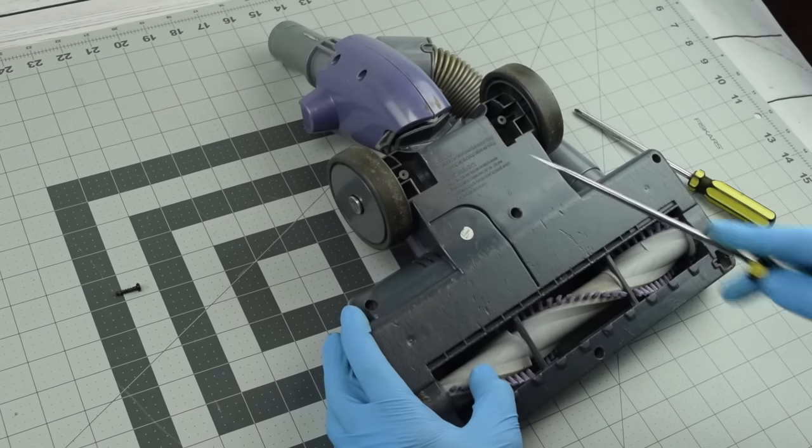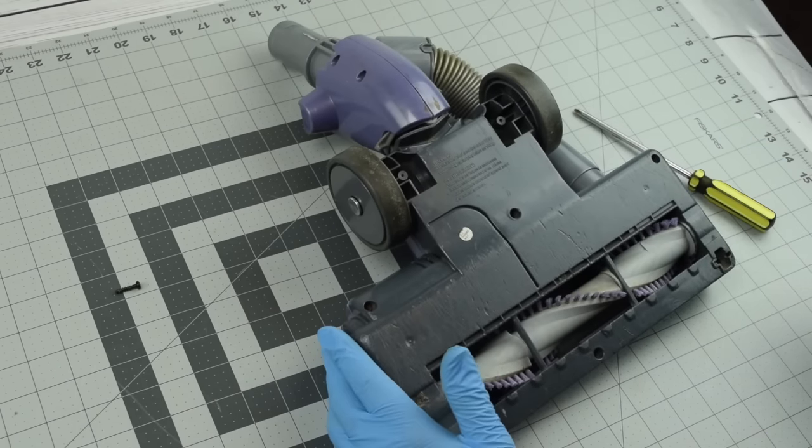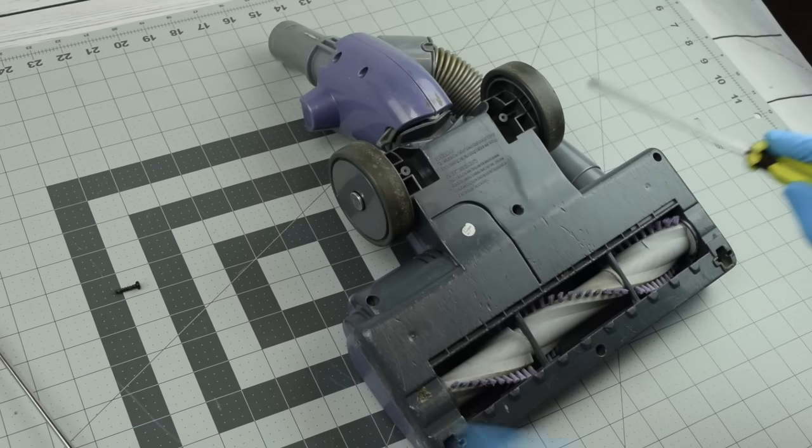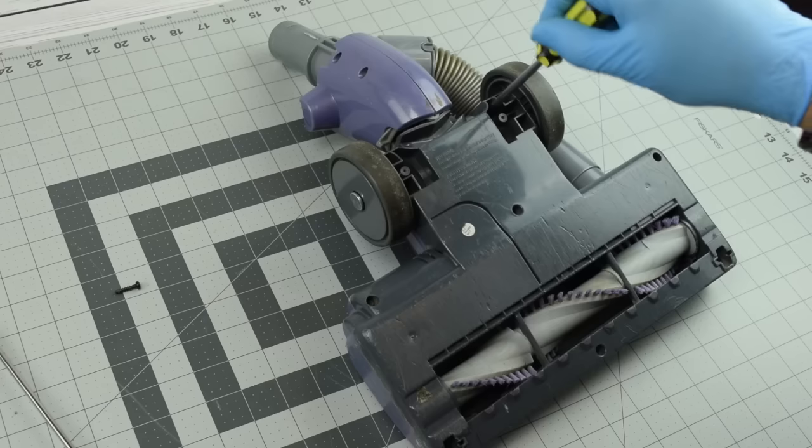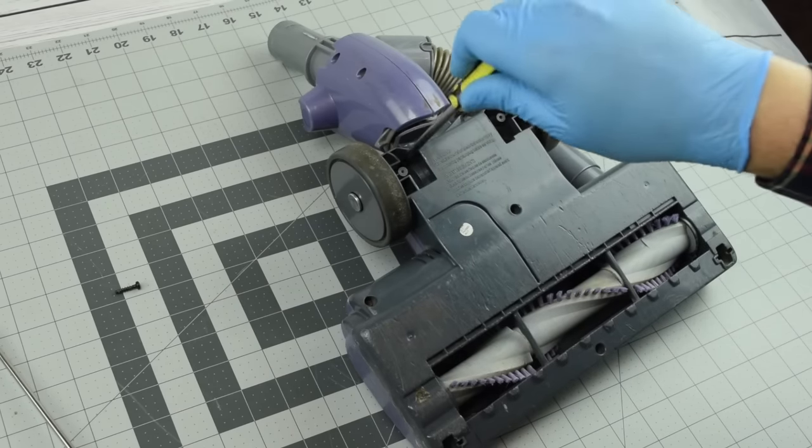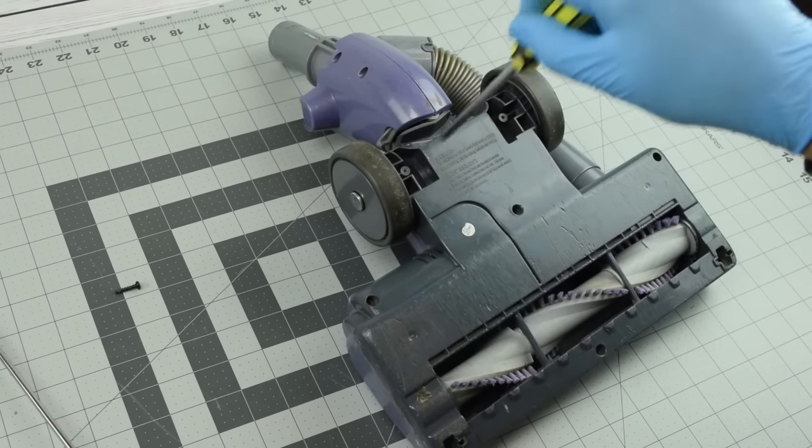And then there's actually two more screws that you might miss. Well, there's two that are right here, they're pretty obvious. But then there's one down in this crevice right here, two, well, two down in these crevices.